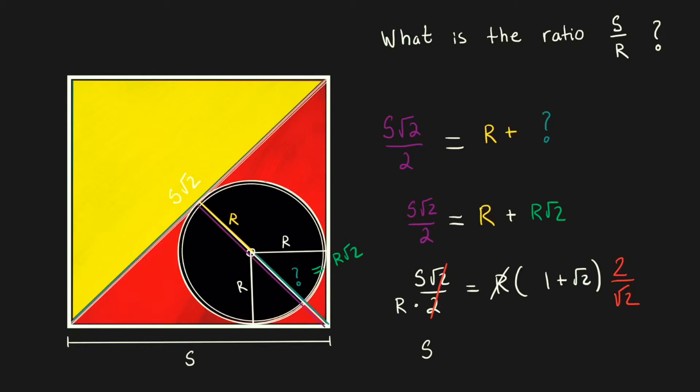s over r should be equal to the quantity 1 plus root 2 times 2 over root 2 which comes to about 3.4. Does it look reasonable from the picture that if r was 1, s would be about 3.5?